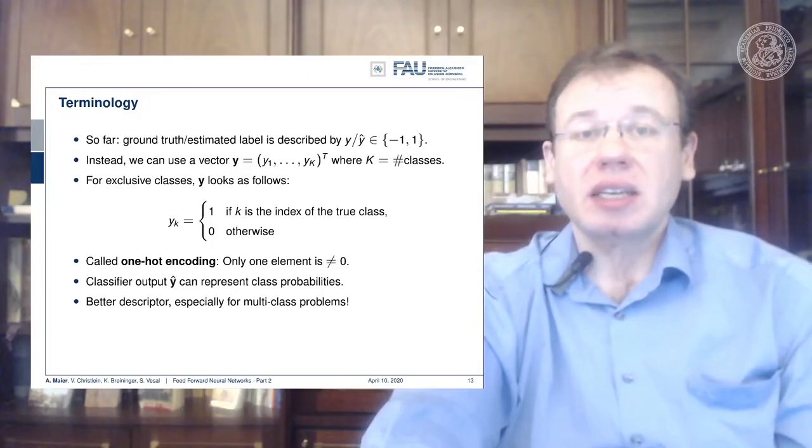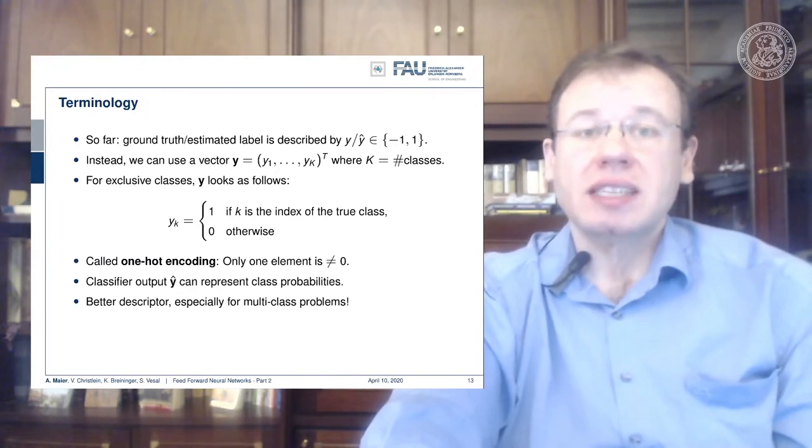You have essentially one dimension per class k, where capital K is the number of classes, and you can define a ground truth representation as a vector.